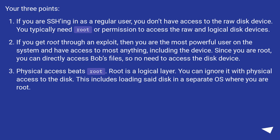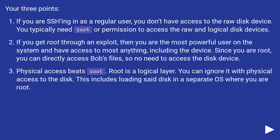Your three points: if you are SSH-ing in as a regular user, you don't have access to the raw disk device — you typically need root or permission to access the raw and logical disk devices. If you get root through an exploit, then you are the most powerful user on the system and have access to most anything, including the device. Since you are root, you can directly access Bob's files, so no need to access the disk device directly.